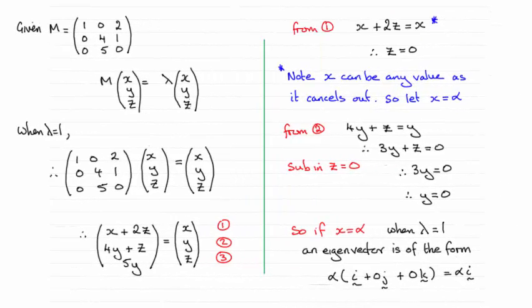Hi there. Now for this part then, we had to find an eigenvector for the eigenvalue 1. So the answer is that you can have any eigenvector of the form alpha times i.